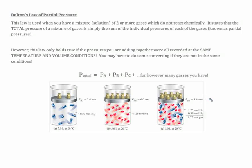What Dalton discovered is that when we have a mixture of gases, the total pressure is equal to the sum of the individual pressures. So here we've got a 5 milliliter container at 20 degrees.